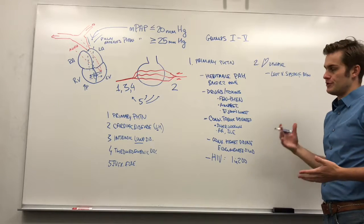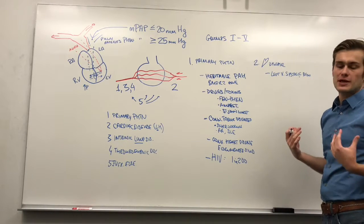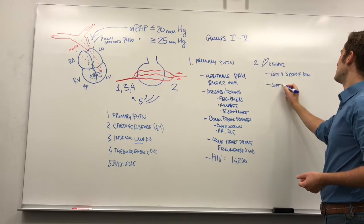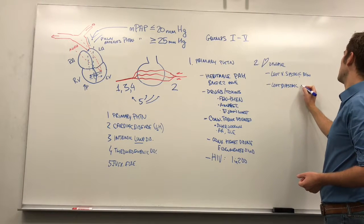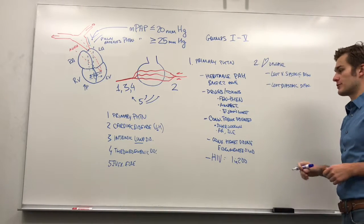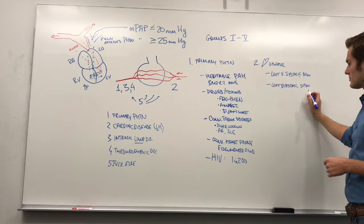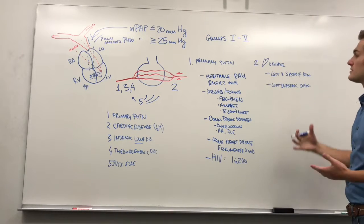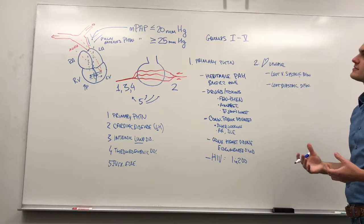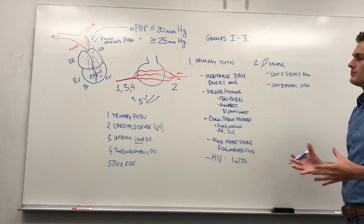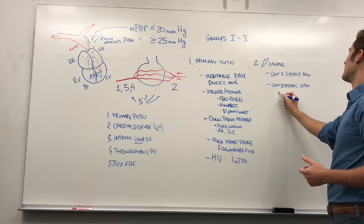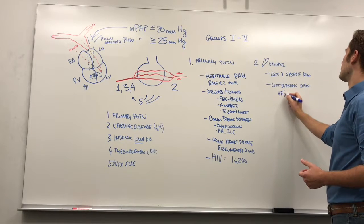Because eventually, if you can't pump blood forward, the extra blood gets backed up behind. Then you have left diastolic dysfunction — this is the really big one for causing pulmonary hypertension. This is an inability of the left ventricle to fill, which really causes a lot of blood to back up, because if it can't fill, it can't take up the extra blood that's flowing towards it. One of the big examples of this is heart failure with preserved ejection fraction.